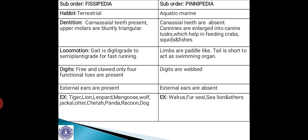In Fissipedia, external ears are present, whereas in Pinnipedia external ears are absent because they are aquatic forms. Examples of Fissipedia include tiger, lion, leopard, mongoose, wolf, jackal, otter, cheetah, panda, raccoon and dog. Examples of Pinnipedia include walrus, fur seal, sea lion and others.